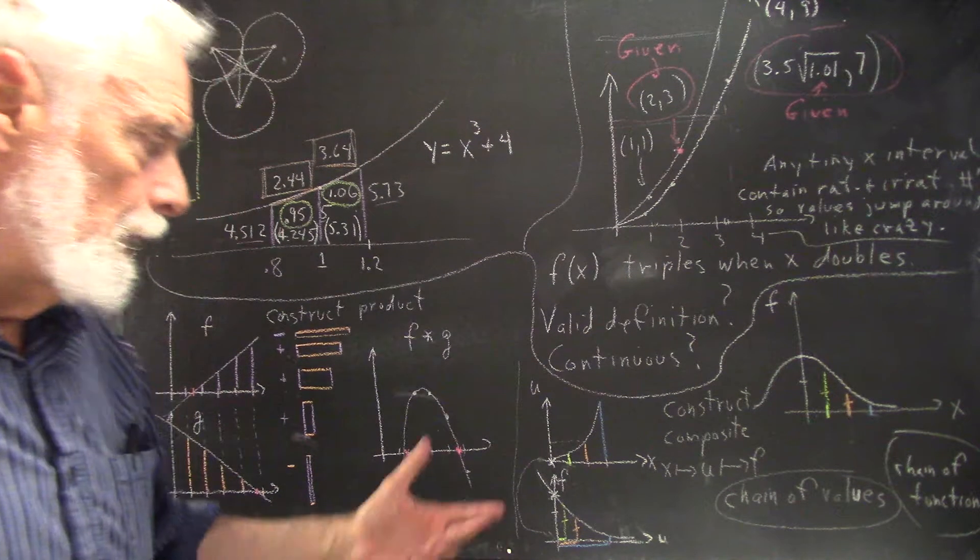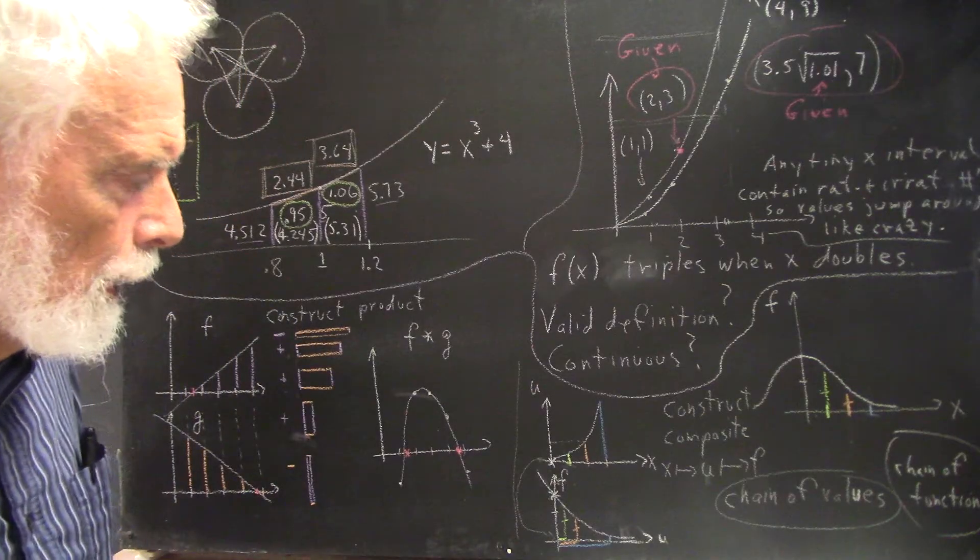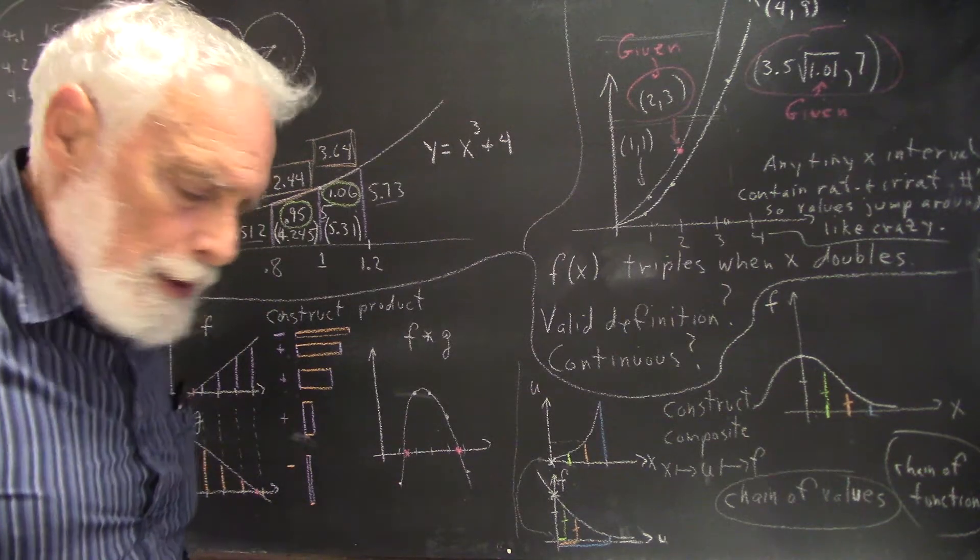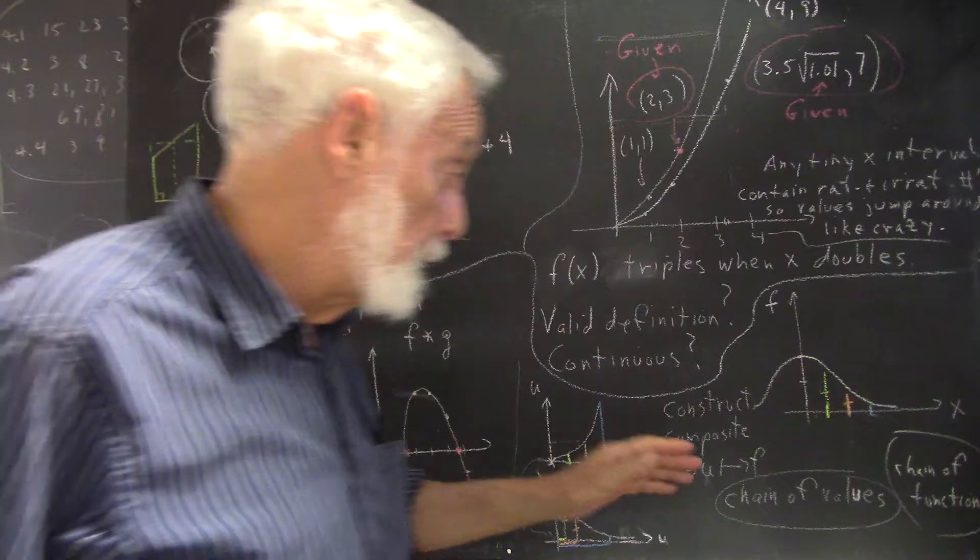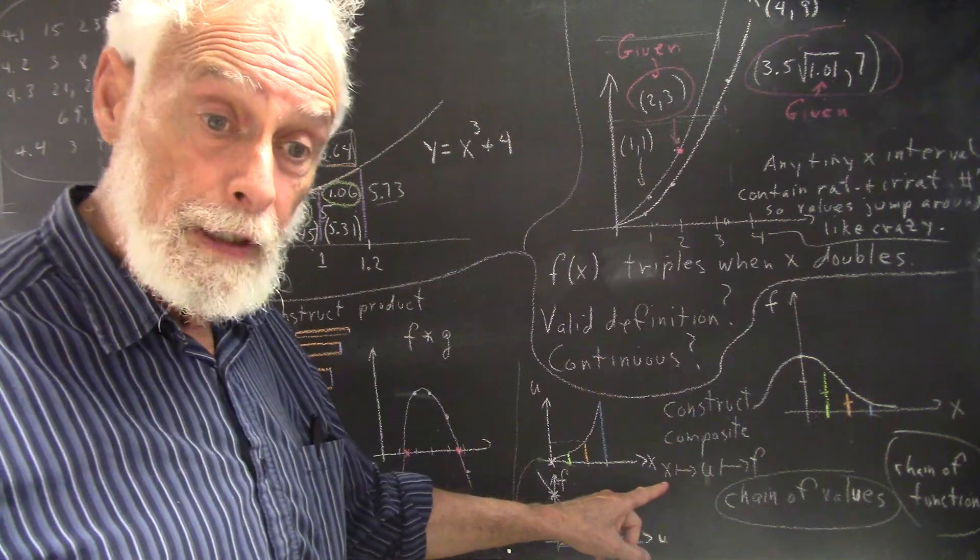Okay, now we want to look at the idea of constructing a composite. We've already, in class, we already saw how we can construct a chain of values. We started with a value of X.